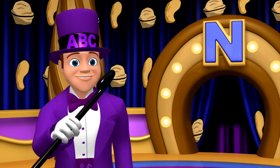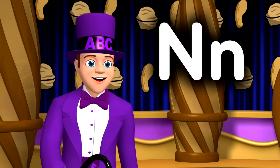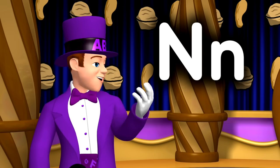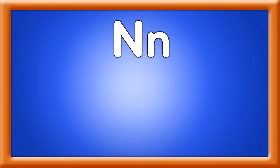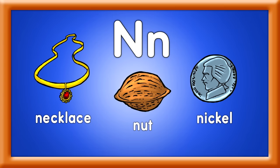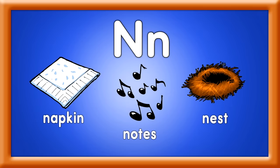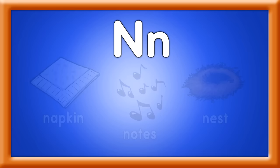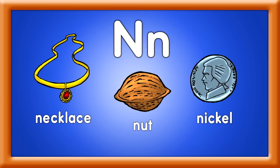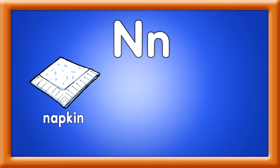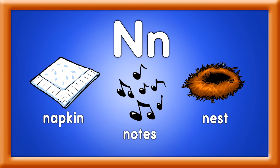Neato! Now there's a capital N and a lowercase n. Necklace, nut, and nickel — all begin with N. Napkin, notes, and nest. Necklace, nut, and nickel — sing with me, my friend. Napkin, notes, and nest — all begin with N.